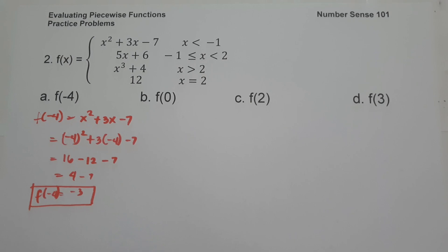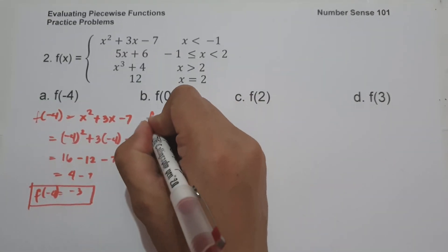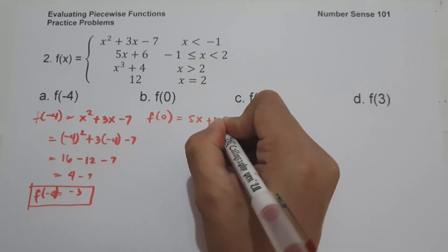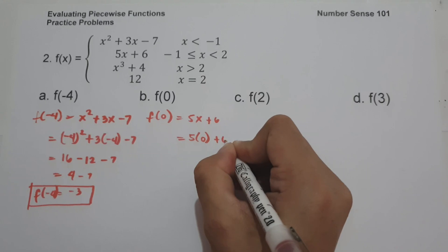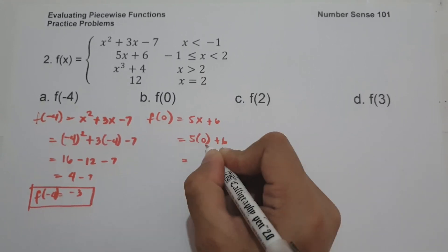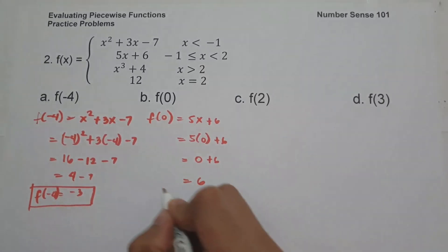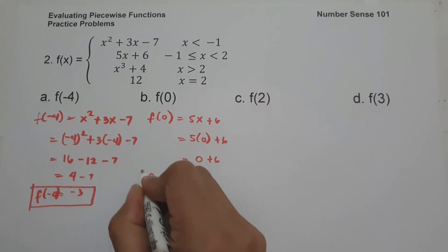What about letter B? How can we find the value of f of 0? Since 0 is between negative 1 and 2, we are going to use 5x plus 6. So this will be 5 times 0 plus 6. 5 times 0 is 0, plus 6, and this will be 6. This will be the value of f of 0.